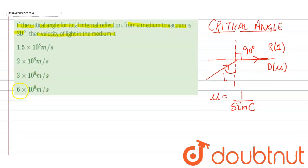So in this question, we are given critical angle to be 30 degrees. So mu comes out to be 1 upon sin 30 and sin 30 will be 1 by 2. So that means mu will come out to be 2.